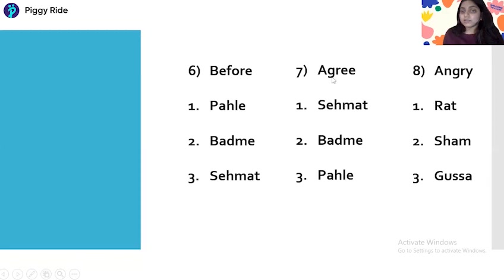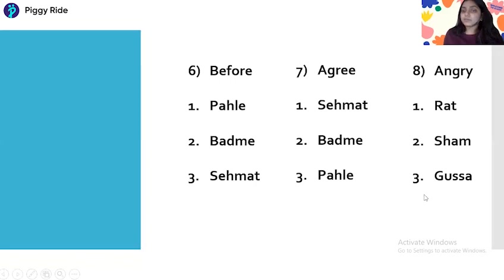Question eight is 'Angry.' Angry means — option one: Raat, option two: Sham, option three: Gussa. The Hindi meaning of Angry is Gussa. So: Agree means Sehmat, Before means Pahle, Angry means Gussa.